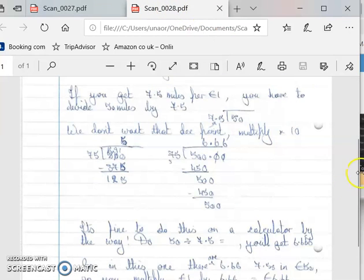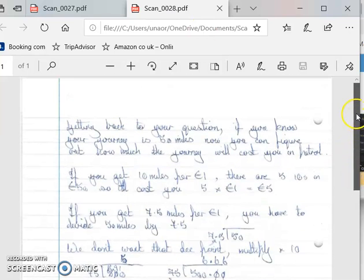Getting back to your question, if you know that your journey is 50 miles, now you can figure out how much the journey will cost you in petrol. So if you get a nice 10 miles per euro, there are five tens in 50—not 50 euros because this is your 50-mile journey—so there are five tens in there. You know that each 10 miles costs you a euro, so it's five times one euro, which gives you five euros. So it'll cost you five euros in this case to get to Tayto Park.